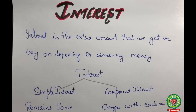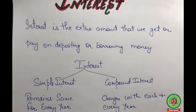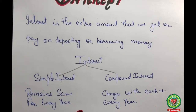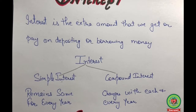Interest is basically of two types. Number one is simple interest, and the second type is compound interest. Simple interest is a set rate on the principal originally lent to a borrower that the borrower has to pay for the ability to use the money.